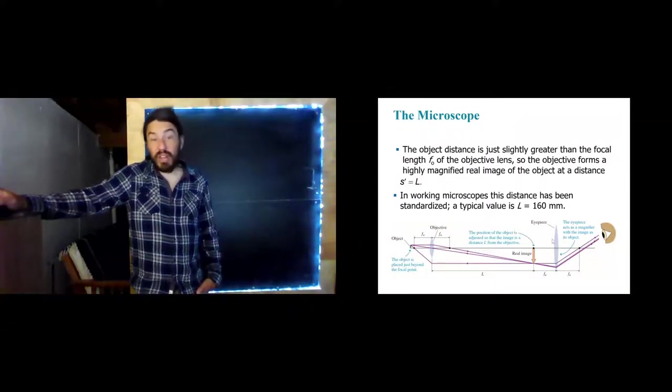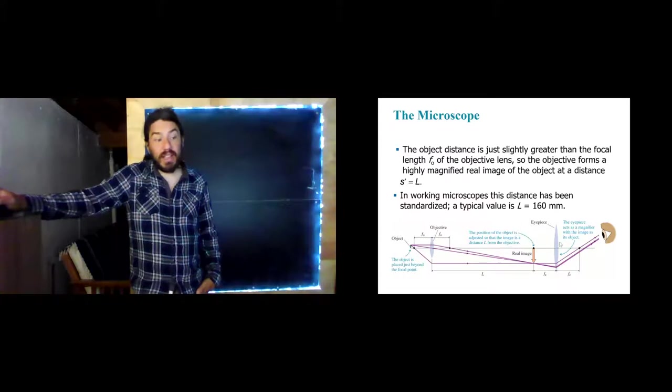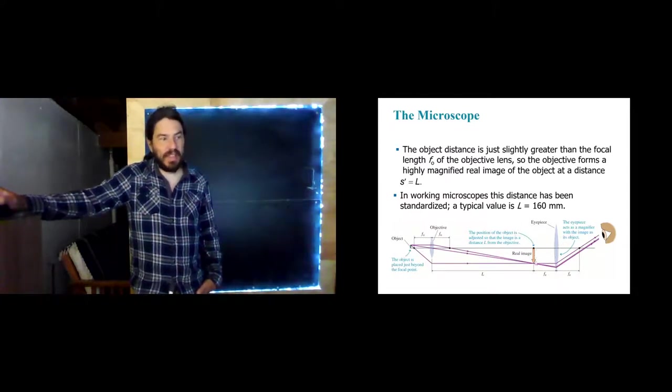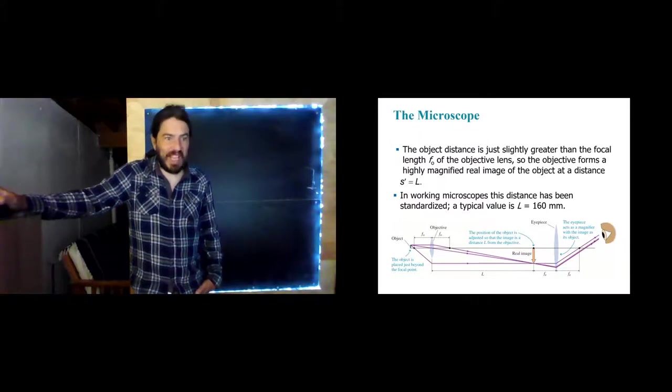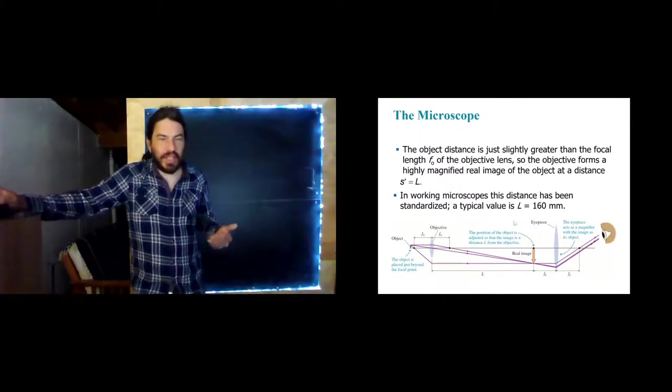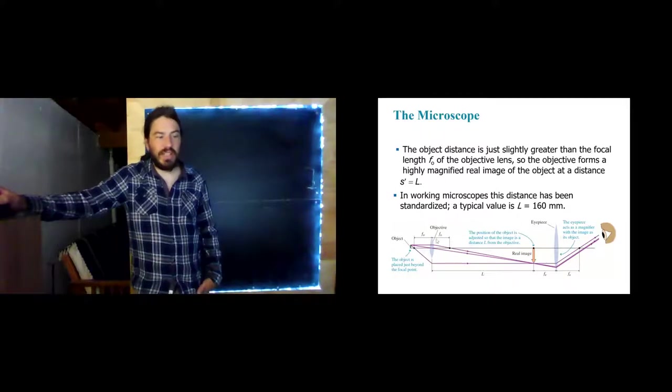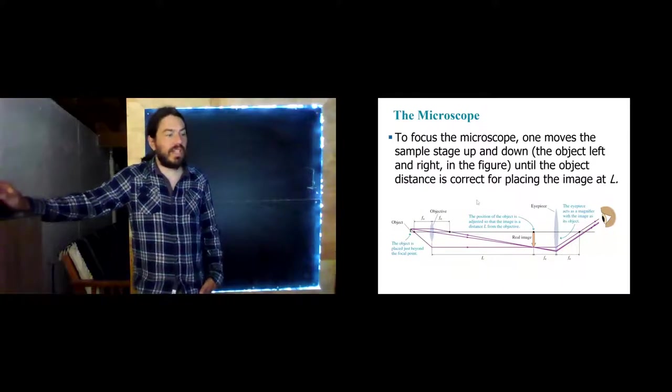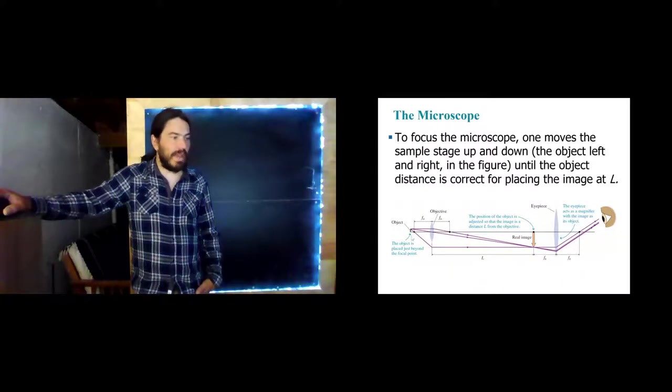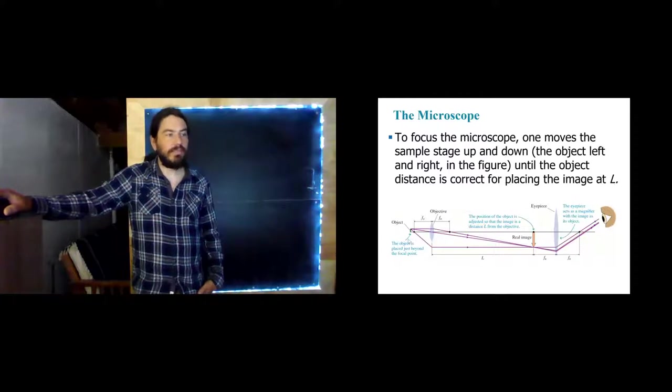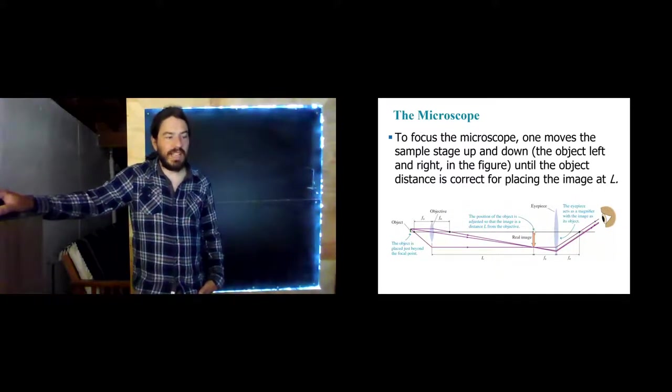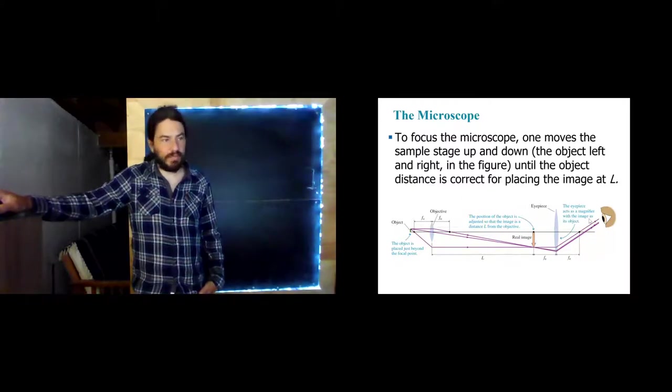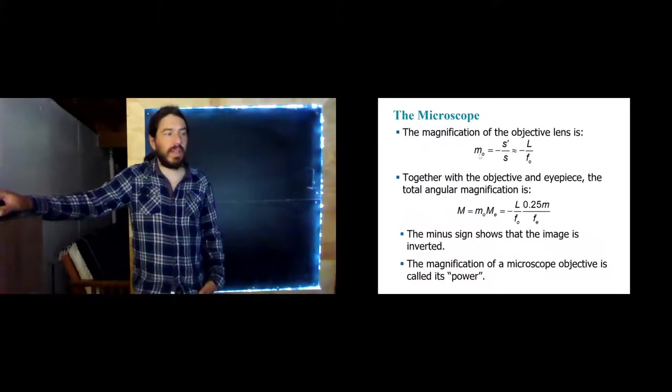The eyepiece then acts just like the magnifier we just discussed. But now it's magnifying this real image. It's not magnifying my eyeball. It's magnifying an image. So the image from the first lens becomes the object for the second lens. And to focus the microscope then, we basically move the object until we form the nice image right at L, and then the whole thing comes into focus.